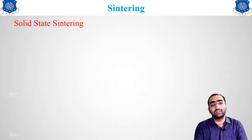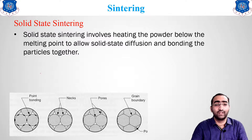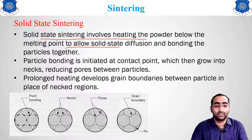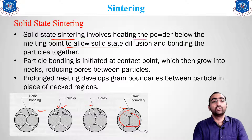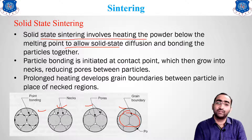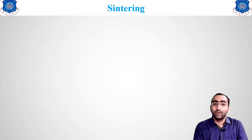In solid state sintering, the powder is heated below the melting point to allow solid state diffusion. Particle bonding initiates at contact points and grows as necks form and particles round at boundaries. The particles in solid state, when heated close to each other, bond through this solid state mechanism.